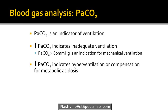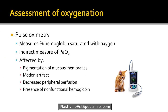A low PaCO2 indicates hyperventilation, commonly seen in anesthetized patients or in pets compensating for metabolic acidosis, like DKA dogs. Pulse oximetry is probably the most common way to assess oxygenation — it measures the percent of hemoglobin saturated with oxygen, an indirect measure of PaO2. It works by sensing the amount of light absorbed by pulsating blood flow, reading two wavelengths: red and infrared. It can be affected by pigmentation, motion, decreased peripheral perfusion, and non-functional hemoglobin like methemoglobin or carbon monoxide exposure.